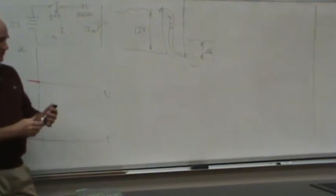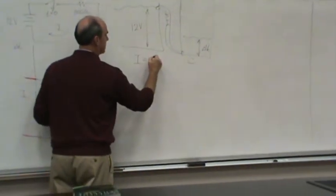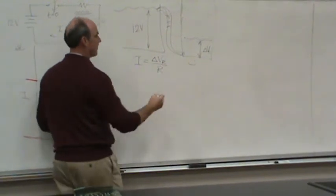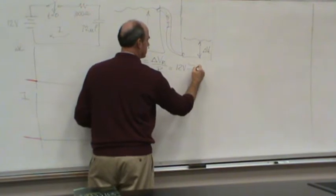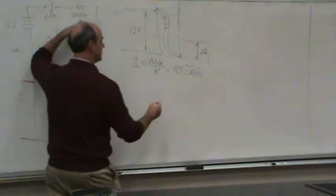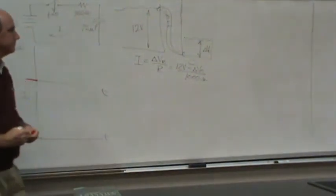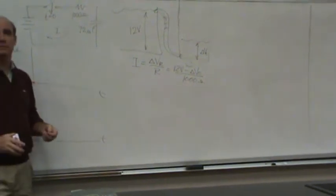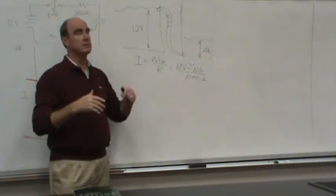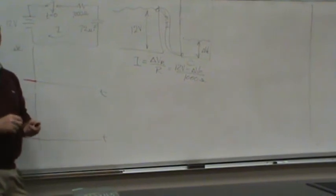According to Ohm's law. So Ohm's law says that the current here is equal to the change in voltage across the resistor over the resistance, which equals 12 volts minus delta Vc over R is a thousand ohms. Does that make sense? It's the pressure difference across the resistor that counts. The amount of current that flows is due to that pressure difference and inversely proportional to the resistance.